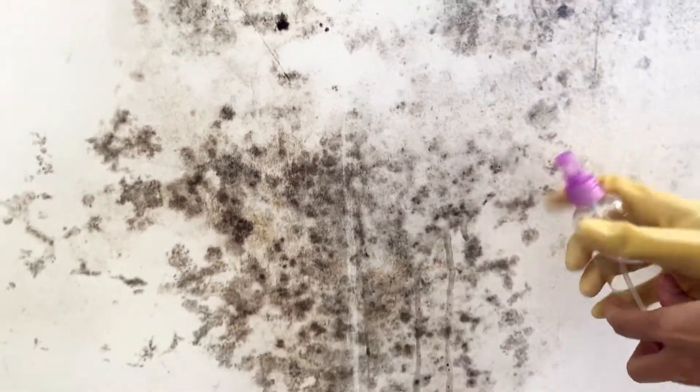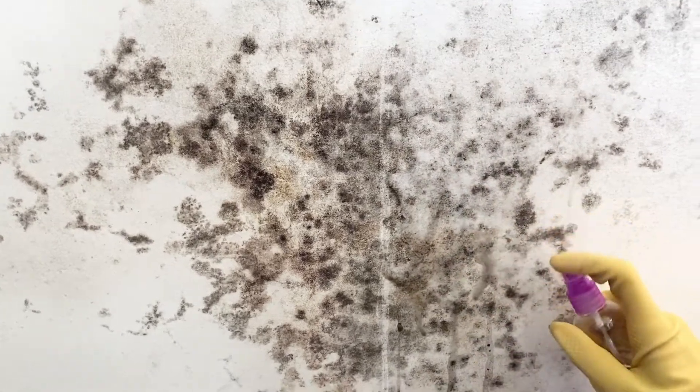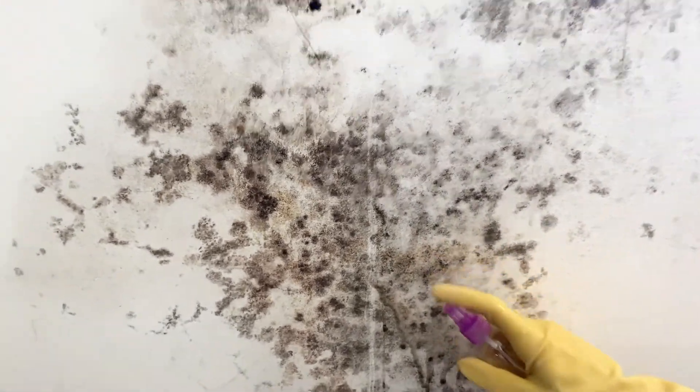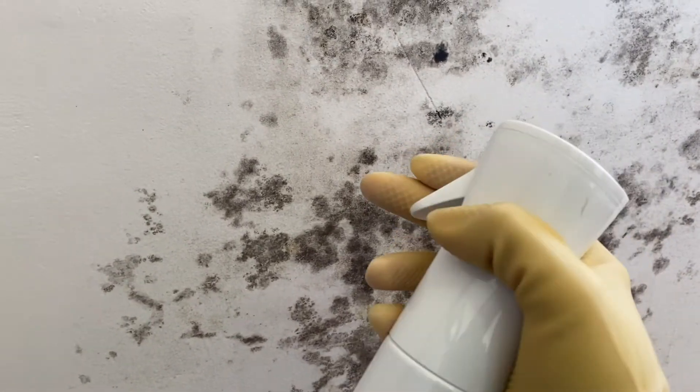So you can see even with the white vinegar as you spray it's already kind of just coming off. So we have our bleach solution and put it in a spray bottle ready to go.